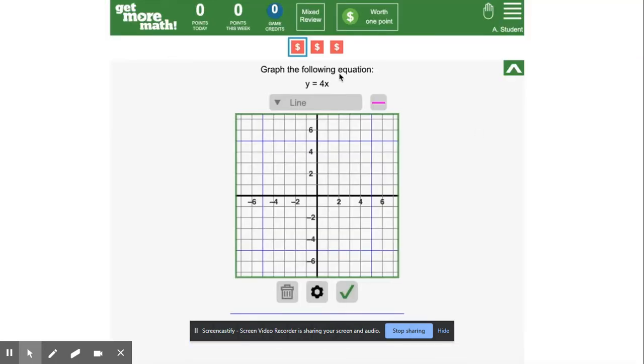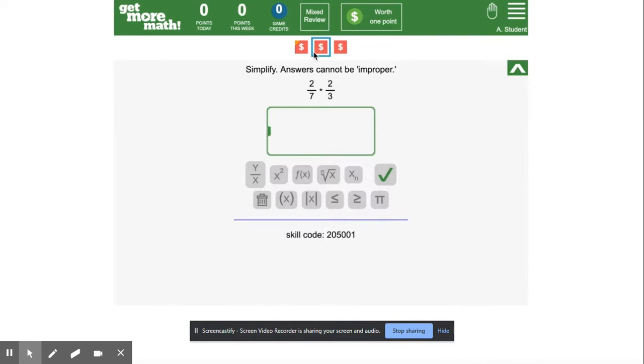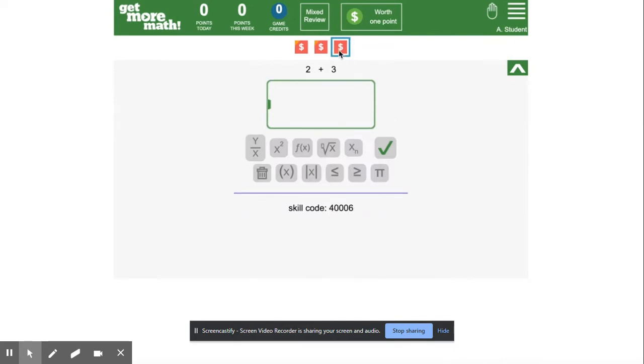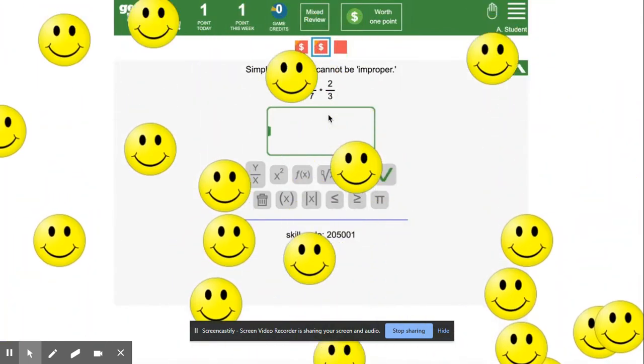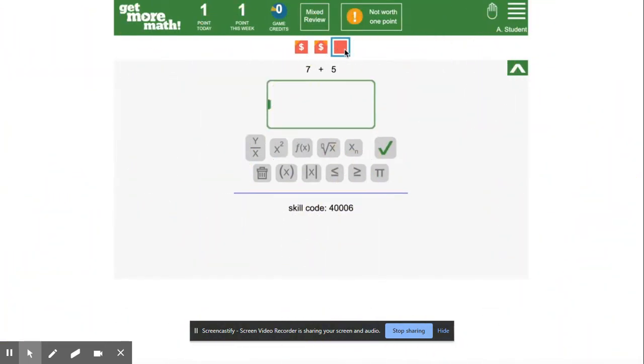So right now I have a graphing problem, a fraction problem, and this one is just simple addition. Let's do one, get it right, and now when that skill is selected, you see a new problem of the same kind.